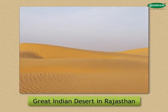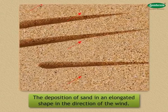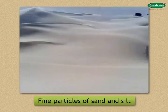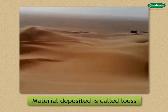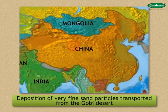Second, Seif: in Arabian language, the word Seif means a sword. These types of dunes are developed due to the deposition of sand in an elongated shape in the direction of the wind. Generally, their height is low, but they can spread over a distance of a few kilometers. Third, Loess Plain: very fine particles of sand and silt are moved away up to thousands of kilometers by wind and are deposited far away from the deserts. The material thus deposited is called loess. At times, such sand deposition gives rise to extensive plains. The Loess Plain in China is formed through the deposition of very fine sand particles transported from the Gobi Desert. Its area is approximately 6.5 lakh square kilometers.